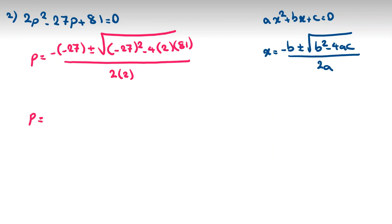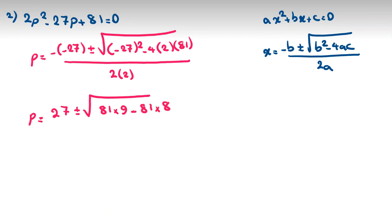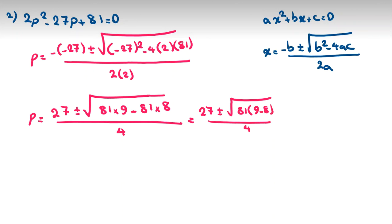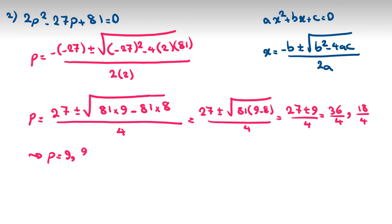Now 27 squared is 729, which is 81 times 9, minus 81 times 8, all over 4. So factoring out 81 gives 9 minus 8 equals 1, and the square root of 81 is 9. So it will be 27 plus or minus 9, all over 4. 27 plus 9 equals 36 over 4 equals 9. 27 minus 9 equals 18 over 4 equals 9 over 2.